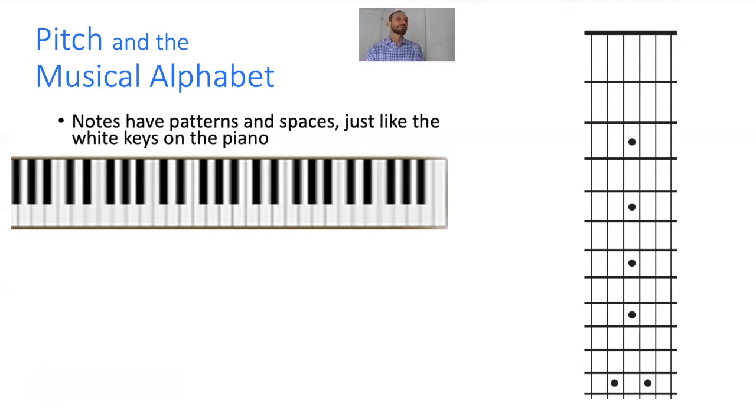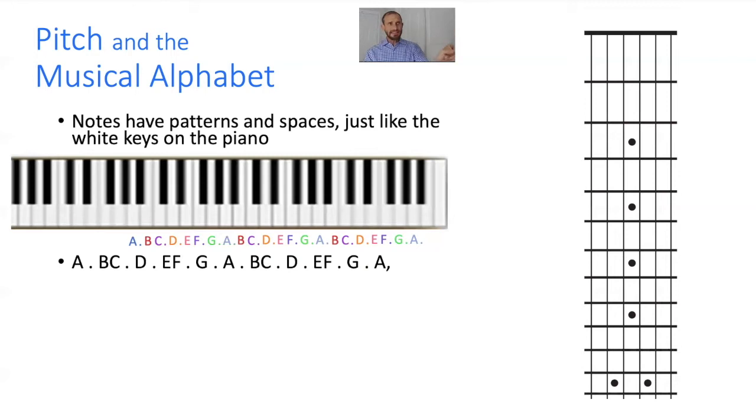We've covered duration. Let's talk about pitch and the musical alphabet. You may have heard of the musical alphabet, but it relates to the keyboard. Notes have patterns and spaces, and the keyboard is a great example of that. We're going to talk now about the white keys on the keyboard. The musical alphabet begins with the letter A, then B follows, which is the next white key. Notice there's a key in between, and then right after that you have C.